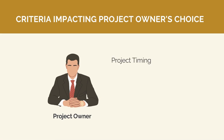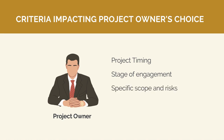The key factors that impact this decision are: project timing — meaning how urgently does the project need to be completed, as it may be hard to run a proper tender and get competitive pricing if urgent; the stage of engagement — at what point in the project lifecycle does the owner want to engage a contractor, whether during feasibility and concept design or only once the design is developed; the specific scope and risks they want to outsource, such as design or the maintenance phase, and how well the project scope is understood; and finally, the level of ownership the project owner wishes to retain and their capability to manage the works — whether they want a turnkey contractor or to be involved in every decision.